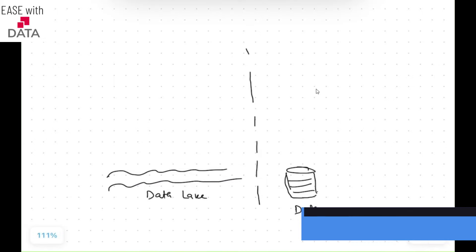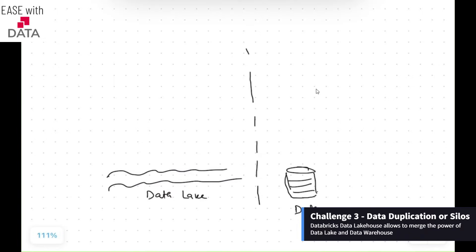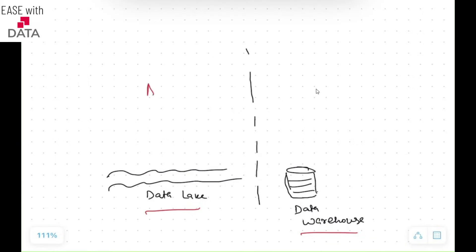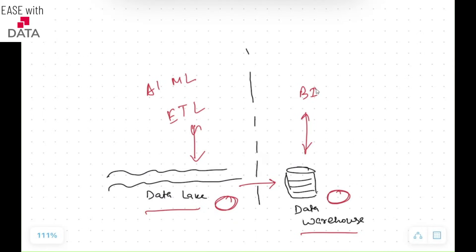Let's understand the third challenge, which is data silos. In a normal data platform, you have a data lake and data warehousing solutions. The problem is your data lake handles AI, ML solutions, and ETL jobs, while your BI tools deal with the data warehousing solutions separately. If you want data in the data warehouse, you have to take data out from the data lake and populate it in a different data warehouse. So you have the same copy of data lying in two places.